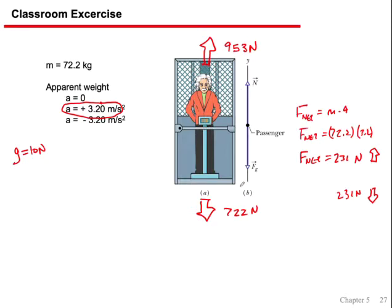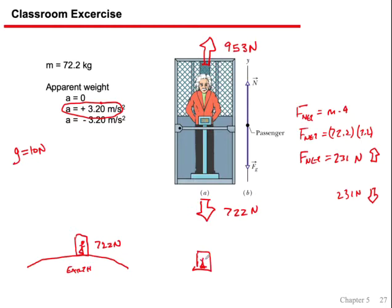Why is Einstein in an elevator? Einstein, in his general theory of relativity, stated there's no way to tell if you're standing on the surface of the Earth — where the scale reads 722 Newtons — or if you've got a rocket engine accelerating you at 9.8 m/s². You would read the same normal force, and there's no experiment you could do inside a sealed rocket to determine if you were in an accelerating rocket ship or on the surface of the planet.